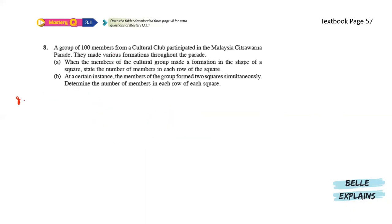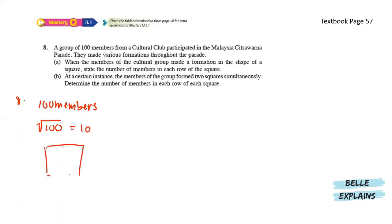Lastly for number 8, a group of 100 members from a cultural club participated in a Malaysia Chitra Warna parade. They made various formations throughout the parade. When the members made a formation in the shape of a square, state the number of members in each row. So we have 100 members. If we would like to create a square with an equal number of members on each side, we square root this number and that gives us 10. So there will be 10 on the base and 10 on the height.